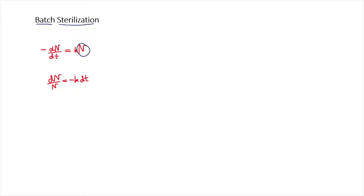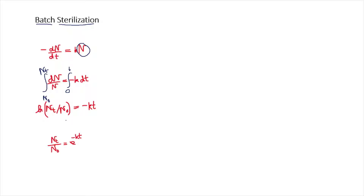Integrating from 0 to t and from N0 to Nt gives: ln(Nt/N0) equals minus kt. This can also be written as Nt/N0 equals e to the power of minus kt.